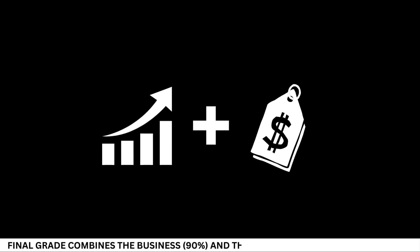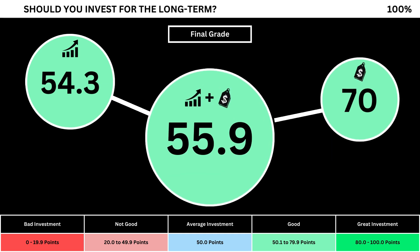Finally, we can put everything together to get the company's final grade. Adding the business grade and the fair price grade, we can see the company's final grade here. Anything less than 50 means it's not a good long-term investment. A final grade above 50 means it would make a good long-term investment if you bought the stock right now.